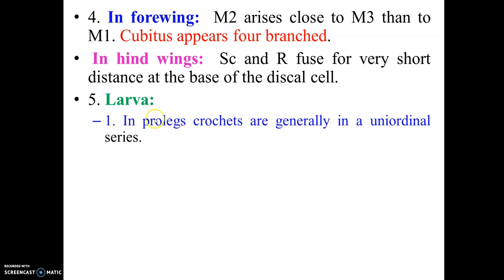Coming to the larvae, they are like ordinary caterpillars. Prolegs are present, and the crotchets present in the prolegs are arranged in different fashions — a single circle, double circle, or triple circle. Here the crotchets are arranged in a single circle, so this type is known as the uniordinal type.